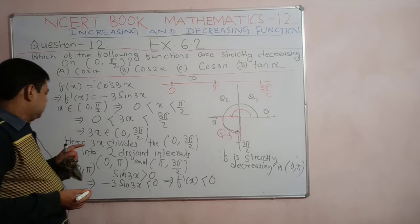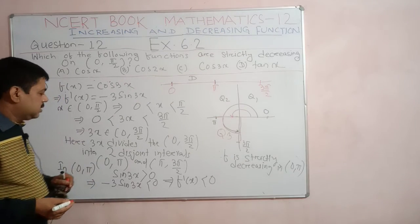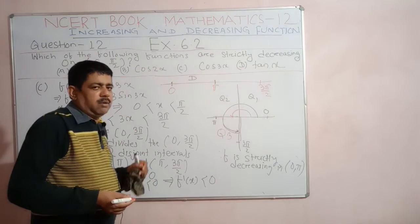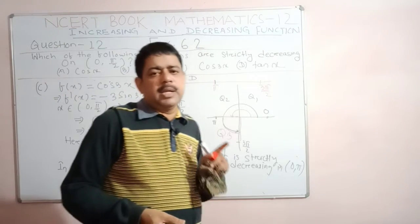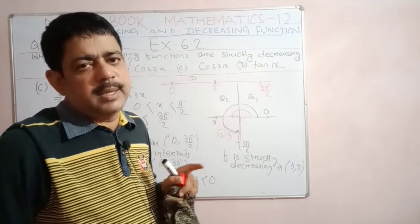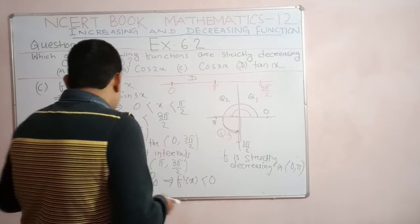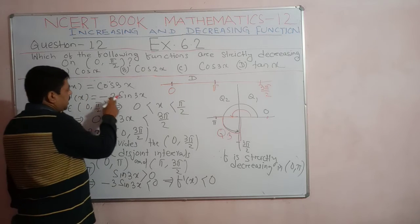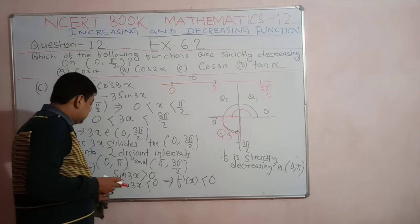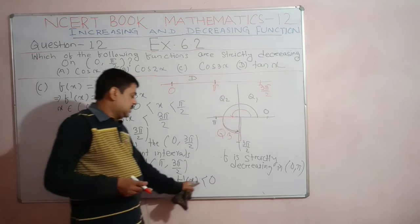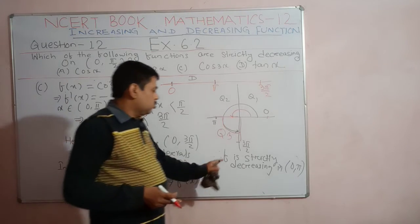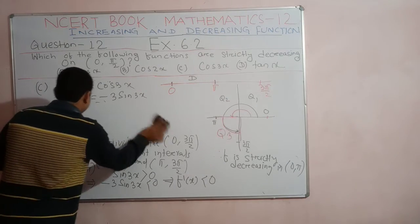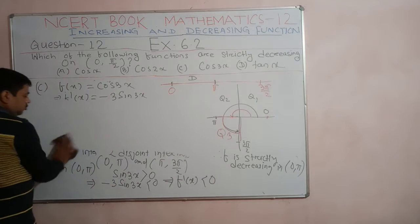In the open interval 0 to π, sin 3x > 0 because the angle lies in the first and second quadrant where sin θ is always positive. So minus 3 sin 3x < 0, meaning f'(x) < 0, and the function is strictly decreasing in the interval 0 to π.